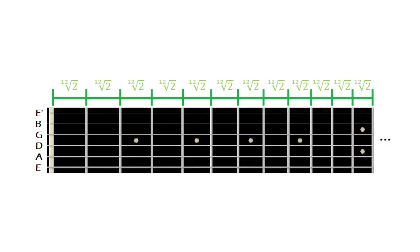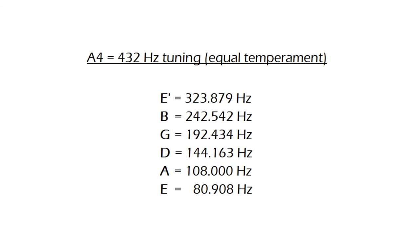If you still wish to tune your guitar to A4 equals 432 Hz, I would recommend you to respect the equal temperament in the frets by tuning the strings in equal temperament as well. These would be the corresponding frequencies.